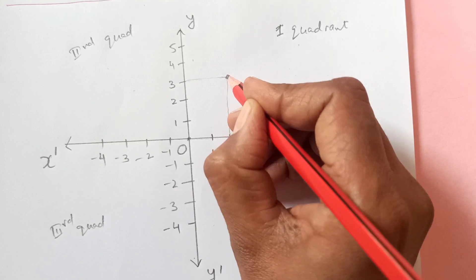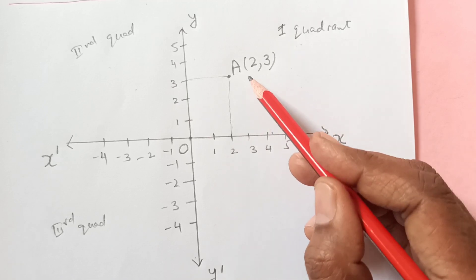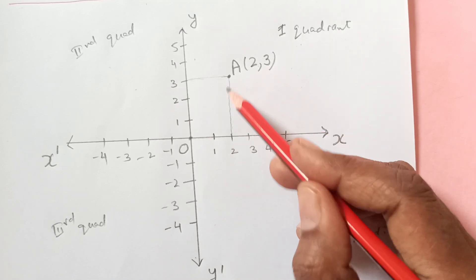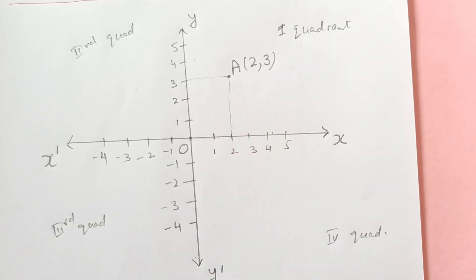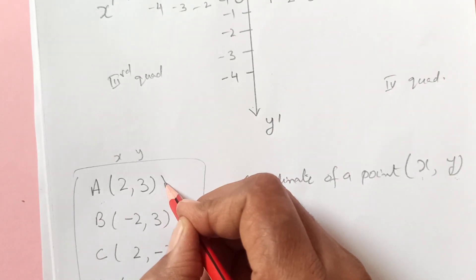So this point is point A having coordinate (2, 3). Meaning the value of A is x is 2 and y is 3. So both were positive, so it came in the first quadrant.